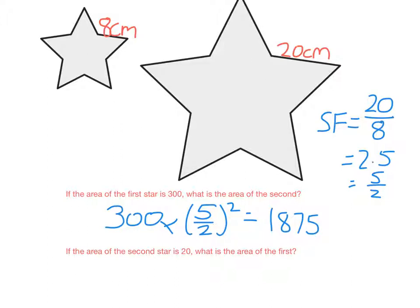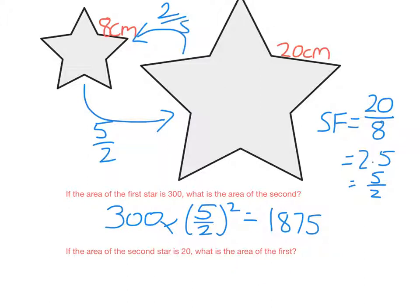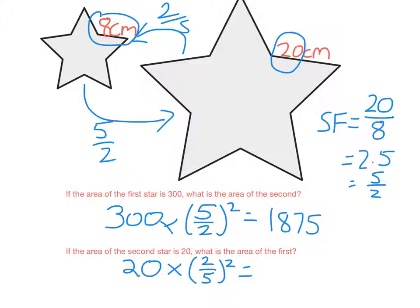Now, if I know the area of the big star and need to find the area of the first star: if the scale factor from smaller to bigger is 2.5 or 5 over 2, then the scale factor from larger to smaller is just the fraction flipped over. So we take the area we know and multiply it by the scale factor squared. In this case the scale factor is 2 over 5 (or 0.4), and putting that in the calculator gives 3.2 — so if the area of the second star is 20, the area of the first star is 3.2 units squared.